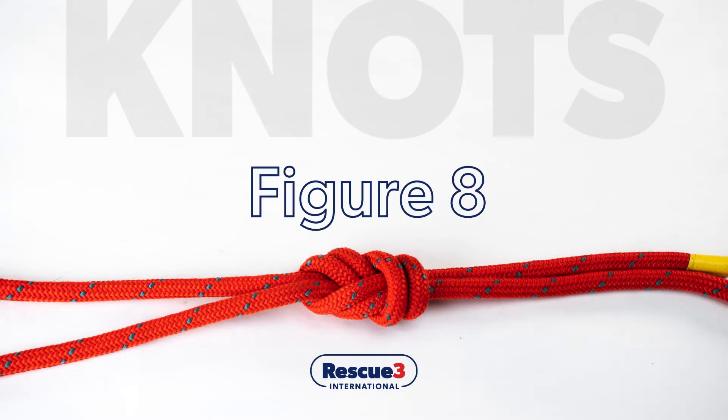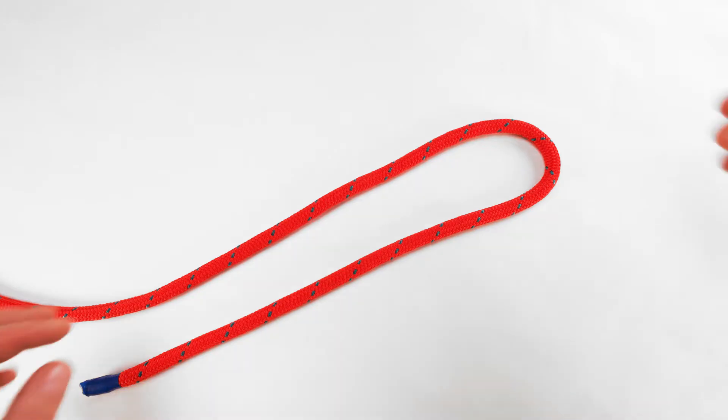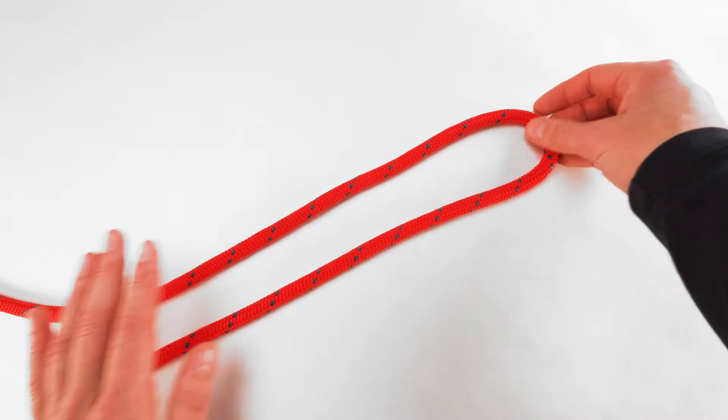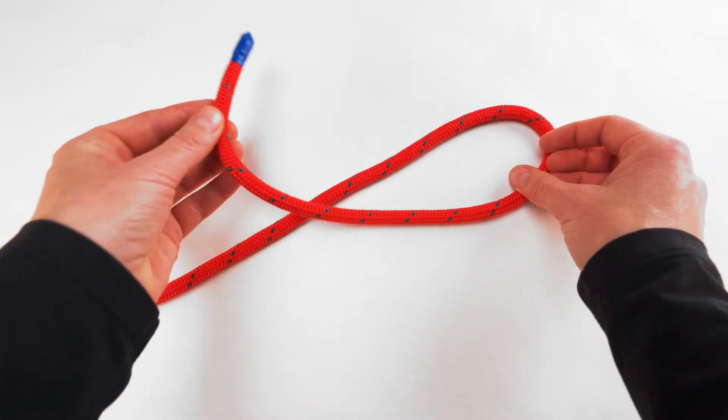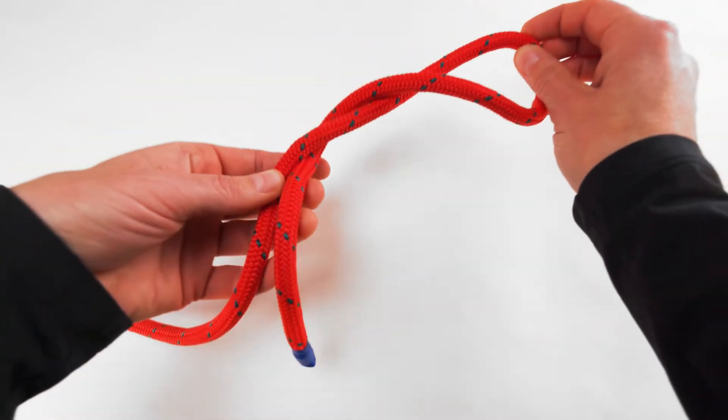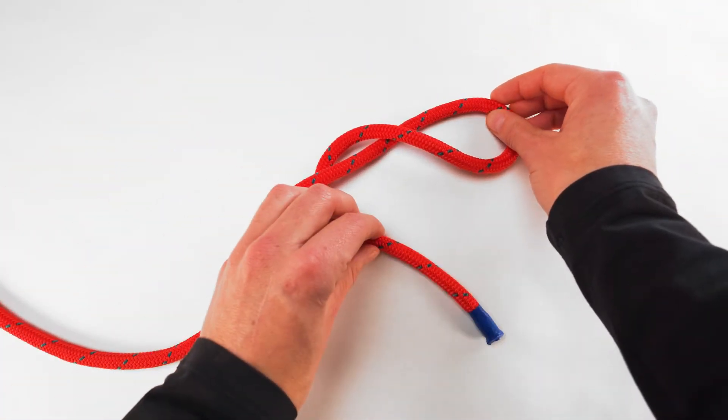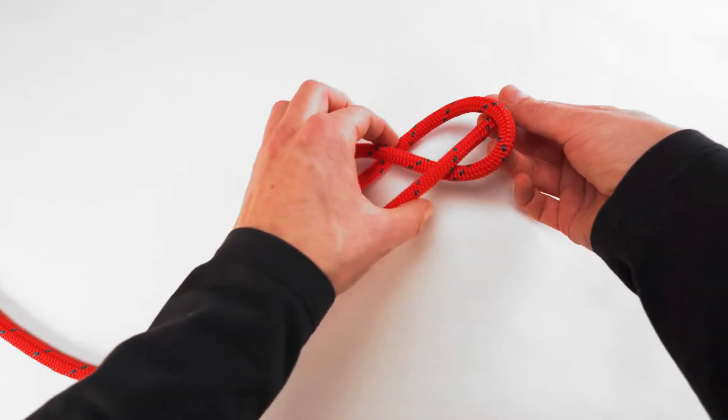Figure eight. To tie a figure eight, form a bite in the area of the rope where you want your knot. Cross the working end of the rope in front of the standing end and now bring it behind the standing end once. Bring the working end up and through the loop and pull.